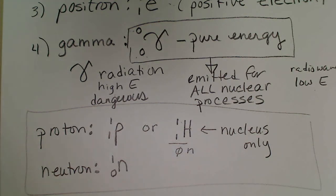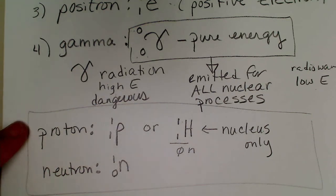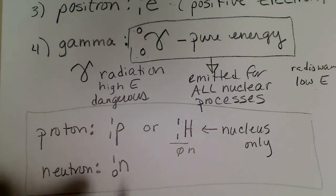So these are not emitted during a nuclear process, but oftentimes protons turn into neutrons or neutrons turn into protons inside the nucleus. And so when we're balancing nuclear equations, we're going to want to make sure that we keep the mass numbers and the charges with each symbol.